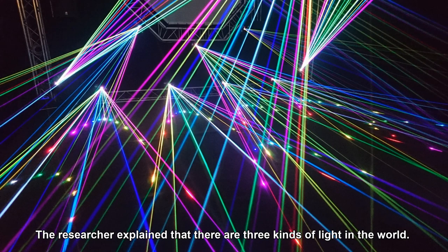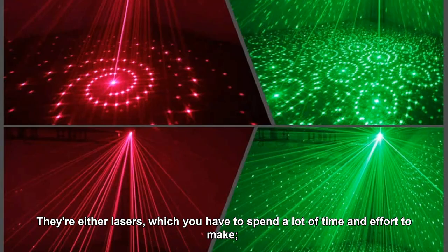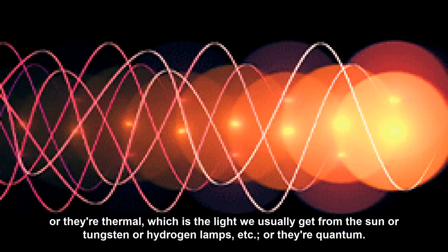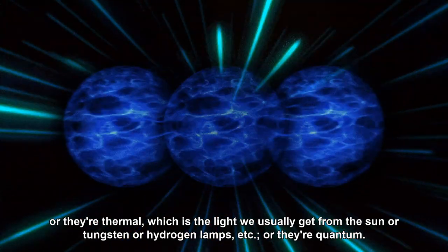The researcher explained that there are three kinds of light in the world. They're either lasers, which you have to spend a lot of time and effort to make, or they're thermal, which is the light we usually get from the sun or tungsten or hydrogen lamps, or they're quantum.